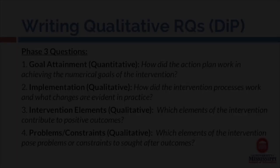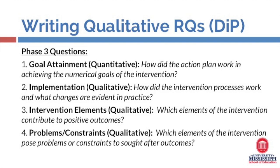For our EDD students, it may be helpful to reconsider your Phase 3 questions for this project. Your Phase 3 questions are a part of your dissertation and practice outline. The first goal area focuses on goal attainment, which is a quantitative question. In this example, the question focuses on how did the action plan work in achieving the numerical goals of the intervention? Numerical goals is your keyword indicating this will give you a quantitative measure, so thinking about pre- and post-test scores or some other measurable output would answer this question. Questions two, three, and four of your Phase 3 questions are the qualitative questions.